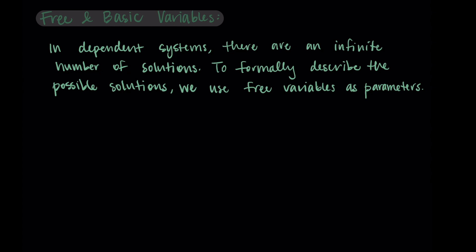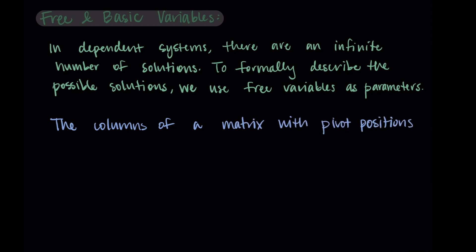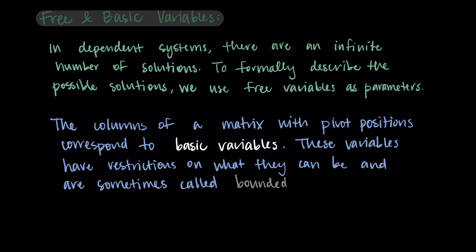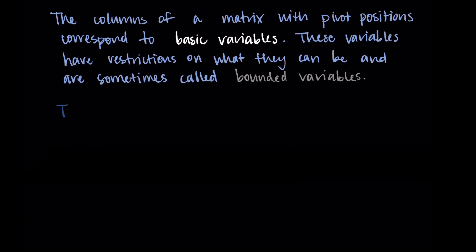Thinking about our pivot positions: the columns of a matrix that have pivot positions correspond to basic variables. These variables have restrictions on what they can be, so they're sometimes called bounded variables. This means that when you're solving the system, some variables have specific designations — like y equals 5, or y equals 2x minus 1. Then the columns of a matrix with no pivot positions correspond to free variables.